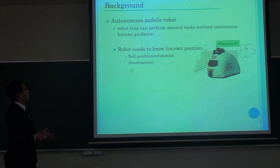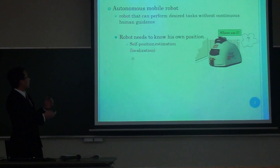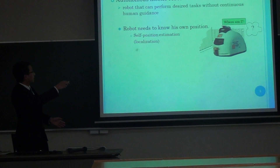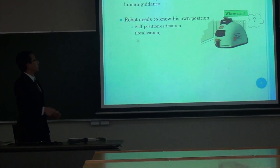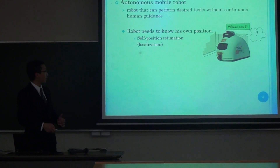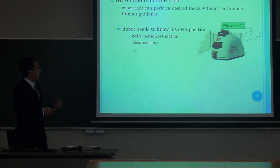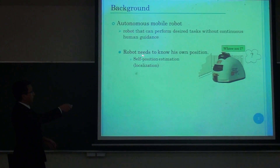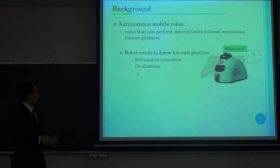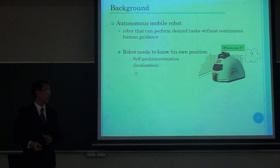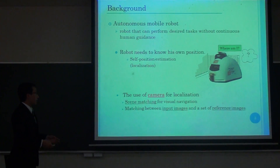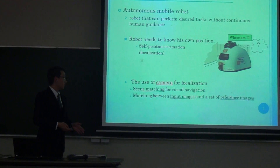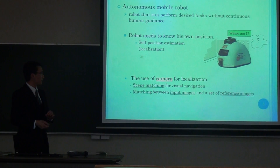As we know, during the past decades, many scientists developed algorithms for the purpose of autonomous mobile robots. An autonomous mobile robot is a robot that can perform desired tasks without continuous human guidance. The robot must perform everything by itself, including answering the question of where it is — there is a need for a robot to understand its own position. In our laboratory, we use a camera for the purpose of localization, and in our previous research, we already developed a scene-matching algorithm for the purpose of visual navigation.